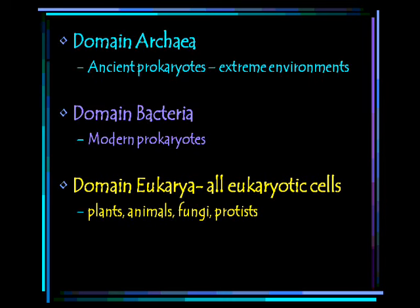The domains are a relatively new class added to this classification system. There are three domains. Two of those domains consist of prokaryotic organisms: domain Archaea, which is also called archaebacteria, and domain Bacteria. Both consist of cells that do not contain a nucleus.